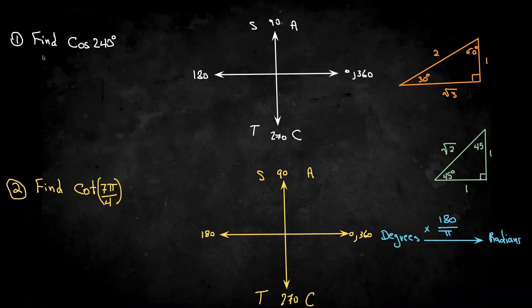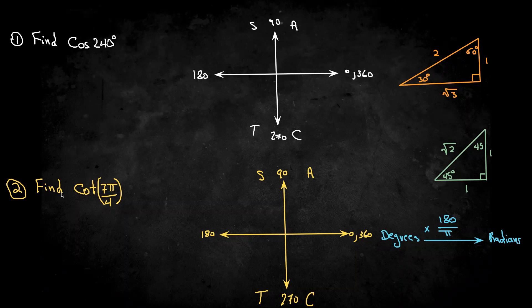So here's two questions. One, finding cos240, the angle here is in degrees, and here find cotangent 7 pi over 4, and the angle in radians. The thing is, you cannot use a calculator for this because all of these are special angle triangles.